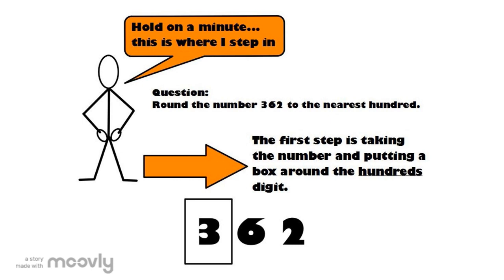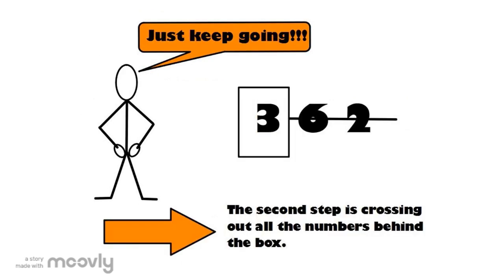When I teach rounding, I always say that you should read the question carefully. Round the number 362 to the nearest hundred. The first step is putting a box around the number you want to round to. In this case, it's the hundred's place. Next, once you've boxed the number that needs to be rounded, cross all the numbers after it out.